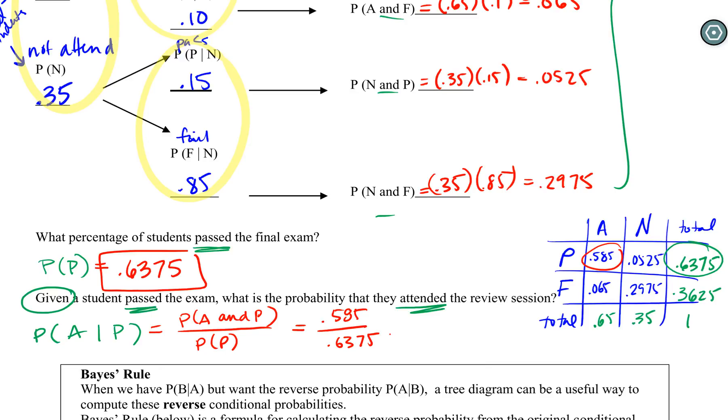Remember that you can go ahead and do this sort of intuitively for the conditional. You can say given they pass the exam, okay, so we're in this category, that's my whole. What's the probability that they attended? This is the part I care about. There's the part of my whole, and you don't have to use the actual probability formulas.